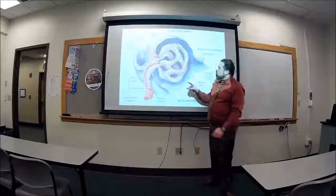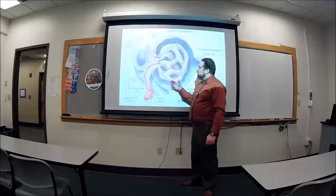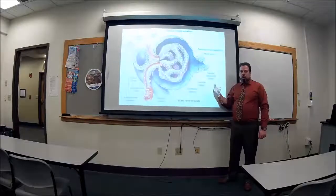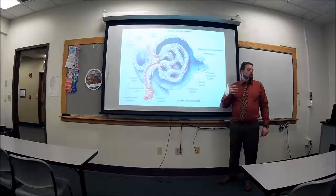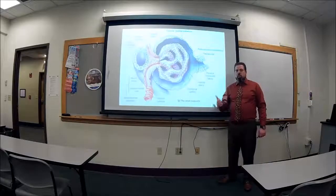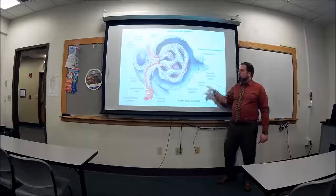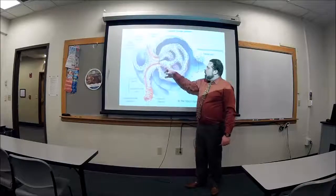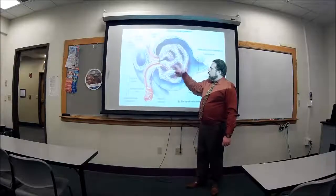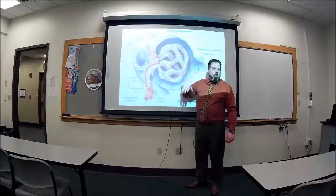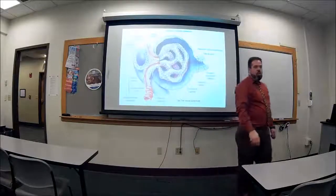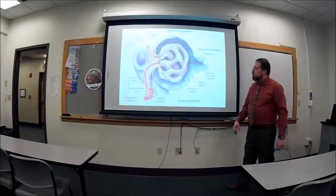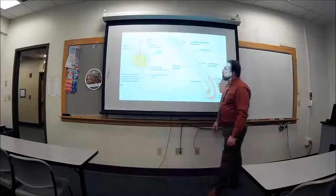All the fluid going through the glomerulus has to enter the nephron to get filtered. Things we don't want to pass through — big proteins and red blood cells — should stay in the bloodstream. So there's a special setup here. You have capillaries, and then other cells sitting on top of those capillaries called podocytes, meaning foot cells. Let's get a close-up of what's going on.